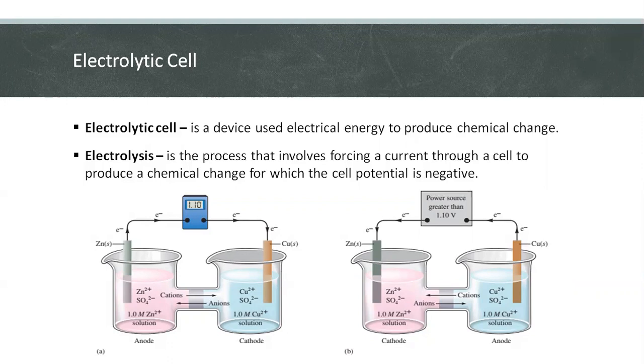Notice that since electron flow is opposite in the two cases, the anode and cathode are reversed between A and B.